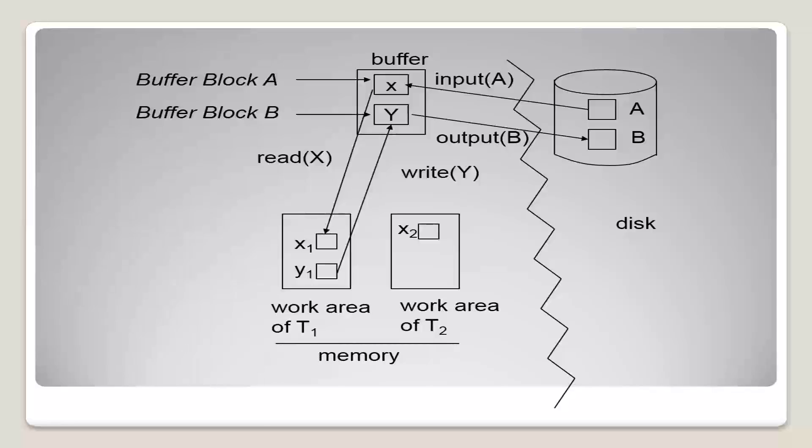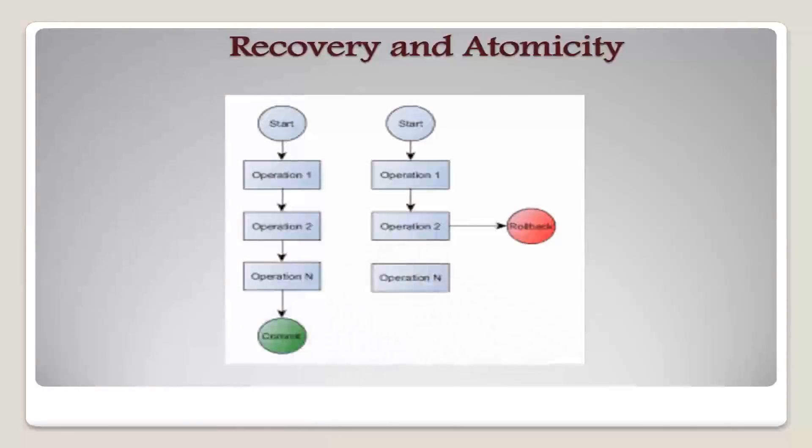Moving to the next subtopic, that is recovery and atomicity. Modifying the database without ensuring that the transaction will commit may leave the database in an inconsistent state. Consider transaction Ti that transfers $50 from account A to account B. The goal is either to perform all the database modifications made by Ti or none at all. Several output operations may be required for Ti. A failure may occur after one of these modifications have been made but before all of them are made.